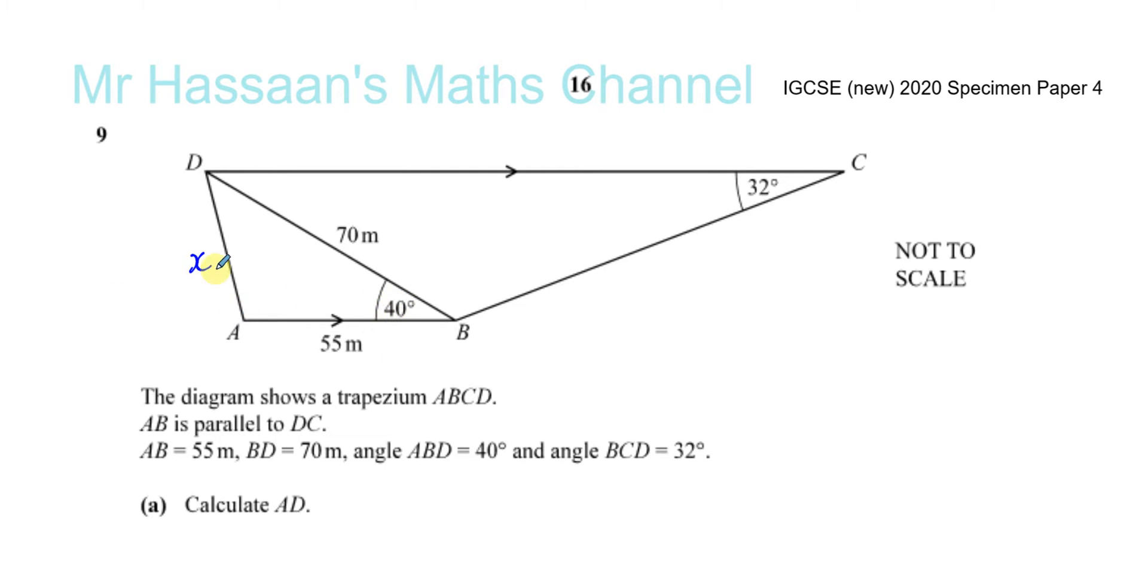So you've got to use one of the non-right angle triangle methods, which are the sine and the cosine rules. Now the sine rule can't be used here because we need two pairs of opposites. We would be able to find this unknown, but you can't use the sine rule here. This is a classic case of using the cosine rule.